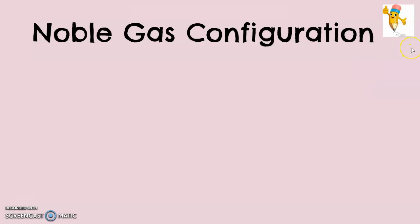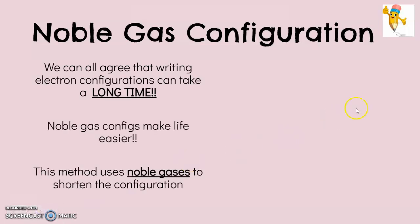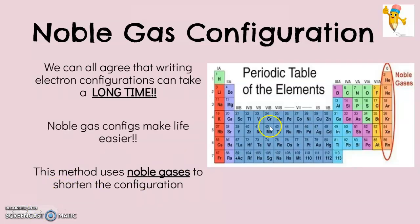So the type of configuration we're still doing is electron configuration, but this particular type is called noble gas configuration. Before we talk about how to do that, we have to remind ourselves of what the noble gases are. The noble gases here are in our periodic table. They are in group or family 18, also known as 8a. They're right here on the very right hand side of our table.